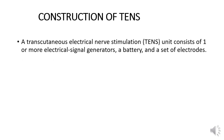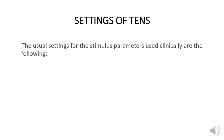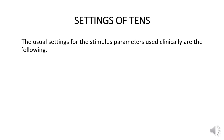A TENS unit consists of one or more electrical signal generators, a battery, and a set of electrodes. The unit is small and programmable, and the generators can deliver trains of stimuli with variable current strengths, pulse rates, and pulse widths.